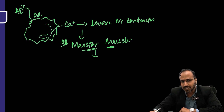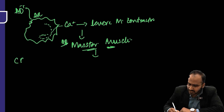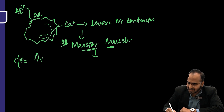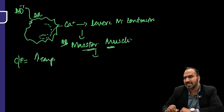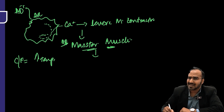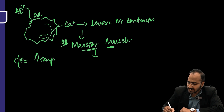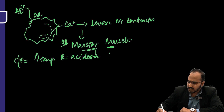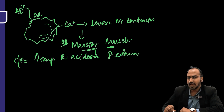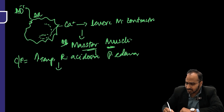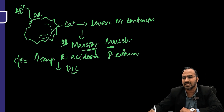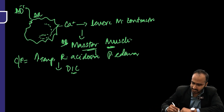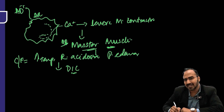Clinical features of malignant hyperthermia: the temperature is abnormally high. As the muscles contract, the respiratory muscles get contracted, leading to respiratory acidosis. The patient may have pulmonary edema, and if not managed properly, can develop DIC — disseminated intravascular coagulation.